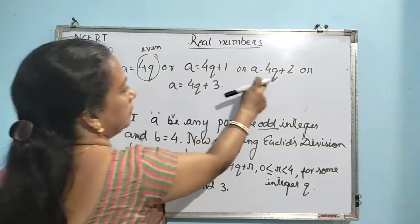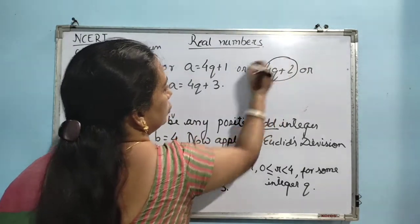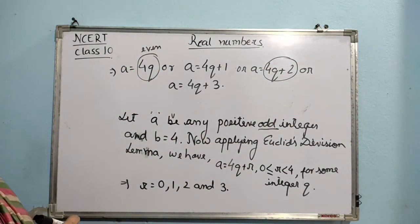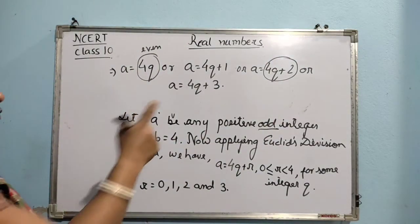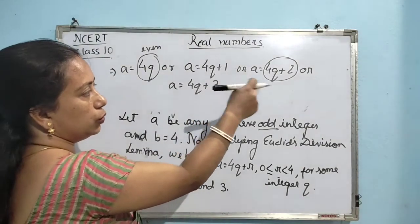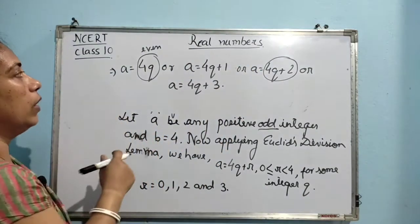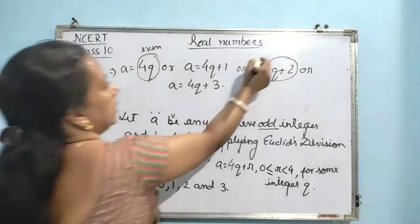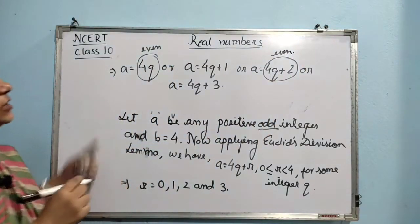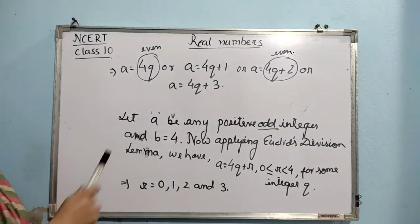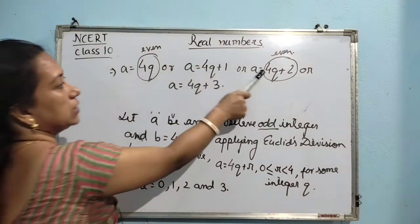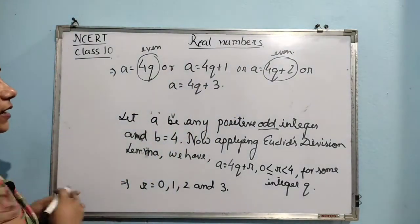So what can you tell about A is equal to 4Q? It is going to be an even number because it is a multiple of 2. Again, 4Q plus 2 is also an even number — if you take 2 common, it is 2 into 2Q plus 1, which is a multiple of 2. So out of these four values of A, these two values will be even, and we have to exclude these two cases.